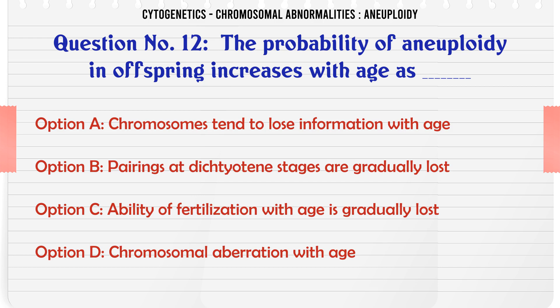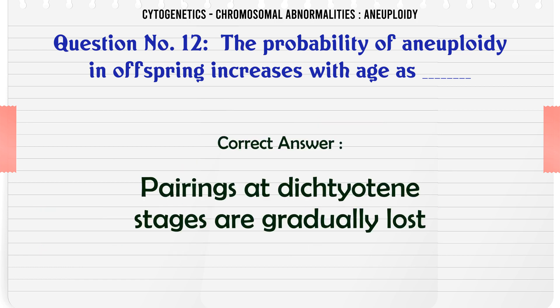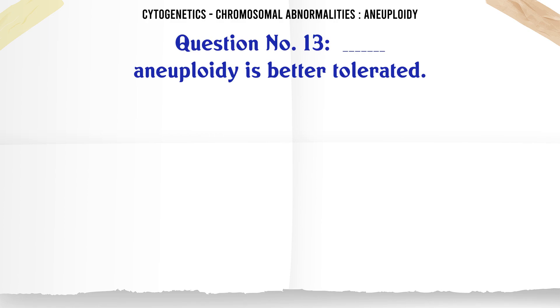The probability of aneuploidy in offspring increases with age because: a. Chromosomes tend to lose information with age, b. Pairings at diplotene stages are gradually lost, c. Ability of fertilization with age is gradually lost, d. Chromosomal abrasion with age. The correct answer is pairings at diplotene stages are gradually lost.